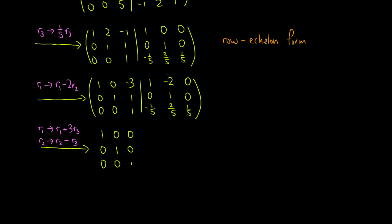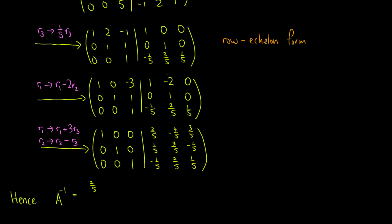Now we have the identity matrix on the left, which means the matrix on the right is A⁻¹. In other words, A⁻¹ = [2/5, -4/5, 3/5; 1/5, 3/5, -1/5; -1/5, 2/5, 1/5].